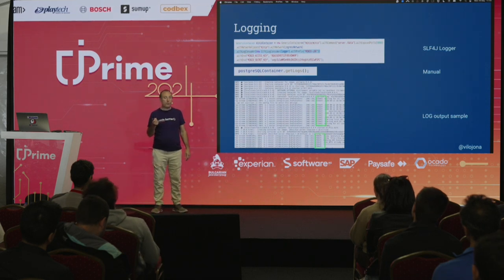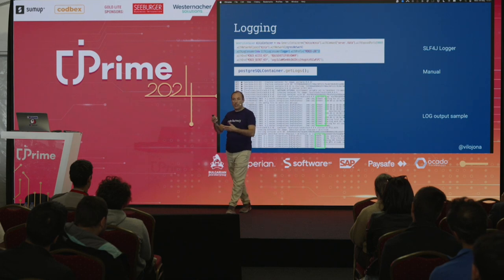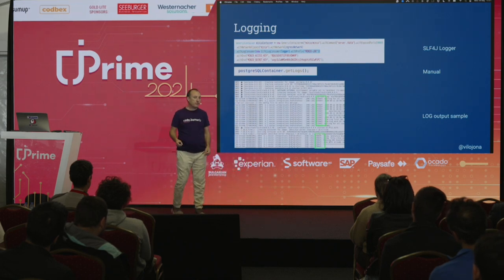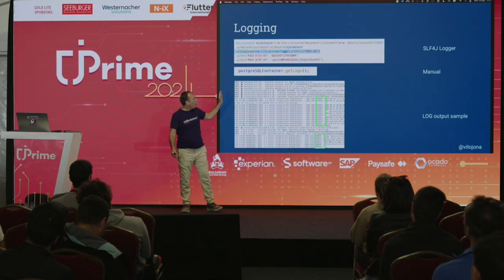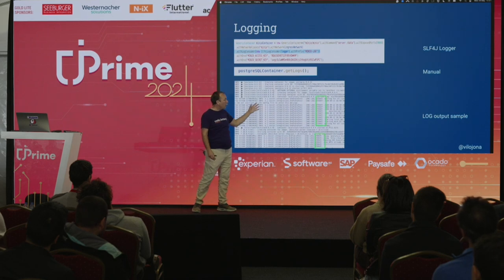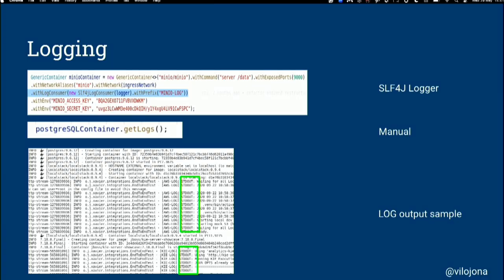Another important thing we do with our containers is logging, because sometimes things go wrong. We are going to have a big log with all our containers, so we need a prefix to indicate which log comes from which machine. We do that by adding a log consumer, specifying slf4j with a name prefix. All logs from every machine will be appended to that common log, but with a prefix for each machine. We can also get logs manually for each container with the getLogs method.